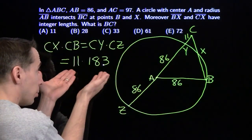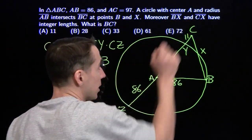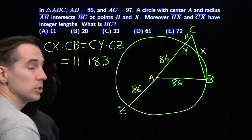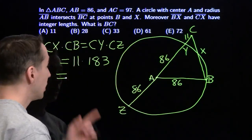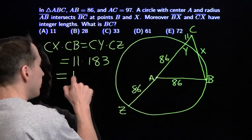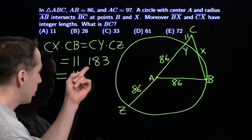So what we're looking for is a way to break this up into the product of two integers, because we know BX and CX are integers. So CB has to be an integer as well, such that the larger of the two integers is less than 183. We've created a number theory problem.